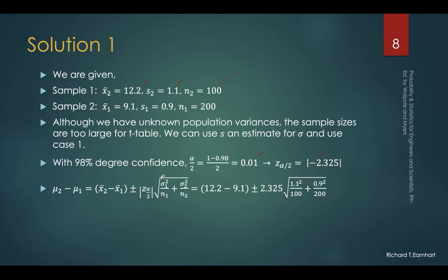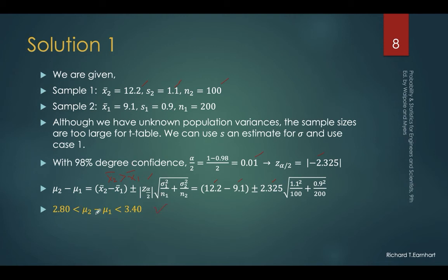With 98% degree confidence, alpha over 2 is 0.01. From the Z table, we get negative 2.325 — take the absolute value for the confidence interval formula. Sigma 1 is 1.1, sigma 2 is 0.9, n1 and n2 are 100 and 200 respectively. We always take x2 to be greater than x1 to avoid a negative difference. We are 98% confident that the difference between the two population means will fall between 2.8 and 3.4.